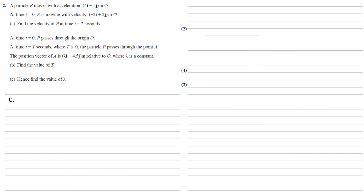Part C, hence find the value of lambda. So it's a hence question, so we're going to use the previous part. So here's our equation that we found in part B. This time we're going to use the i part of the equation because that's where the lambda is. So we end up with lambda is equal to minus 2t plus 2t squared. We know that t is 1.8, so substituting that in gives us a value for lambda of 2.88.